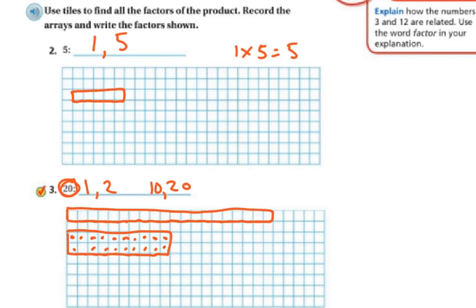3 does not go into 20 evenly, but 4 does. I know 4 times 5 is 20 — so 4 rows of 5 tiles. There are going to be 20 in there when I count them. So my other factor pair is 4 and 5. 6, 7, 8, and 9 do not go into it. Those are my factors: 1, 2, 4, 5, 10, and 20.